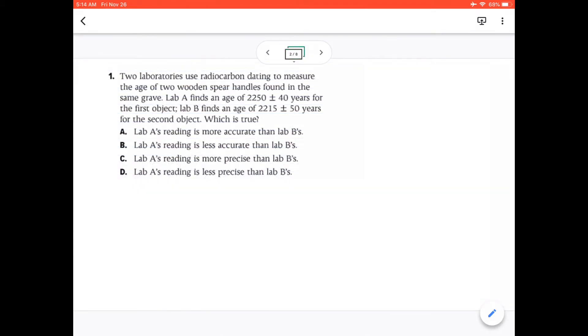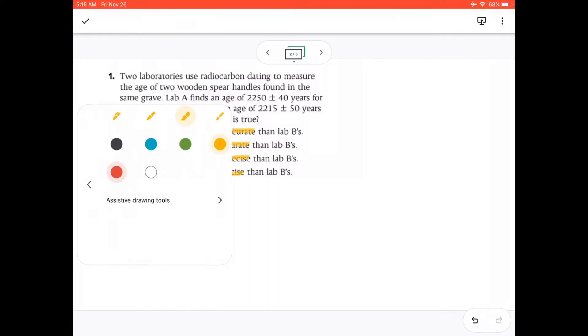Question 1. Two laboratories use radiocarbon dating to measure the age of two wooden spear handles found in the same grave. Lab A finds an age of 2,250 ± 40 years for the first object. Lab B finds an age of 2,215 ± 50 years for the second object, which is true. So this question is testing your knowledge about precision and accuracy. You should know the difference between accuracy and precision.